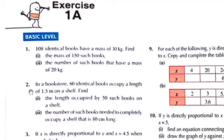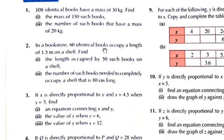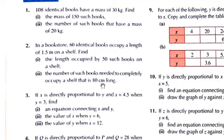Exercise 1A, number 2. In a book store, 60 identical books occupy a length of 1.5 meter on a shelf. First of all, look at the units — 1.5 meter is given. Find the length occupied by 50 such books on a shelf, and the number of such books needed to completely occupy a shelf that is 80 centimeter long. You have to convert to one unit — either meter to centimeter or centimeter to meter — otherwise you cannot calculate.